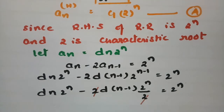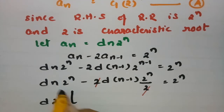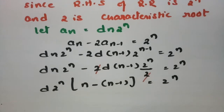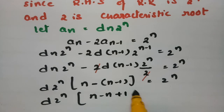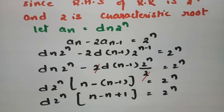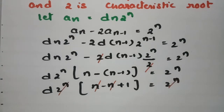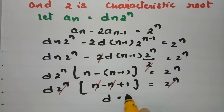Taking d·2ⁿ common from the left-hand side gives d·2ⁿ·[n − (n−1)] = 2ⁿ, so d·2ⁿ·1 = 2ⁿ. Cancelling 2ⁿ from both sides, we get d = 1.